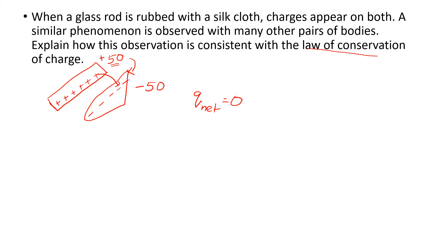The total charge of the system — glass (+50) plus silk (−50) — remains zero, which is consistent with the law of conservation of charge. In an isolated system, the total charge remains constant. Before and after rubbing, the net charge of the system is still zero. Charges are not created; one object loses electrons while the other gains them. Please like and share this video.